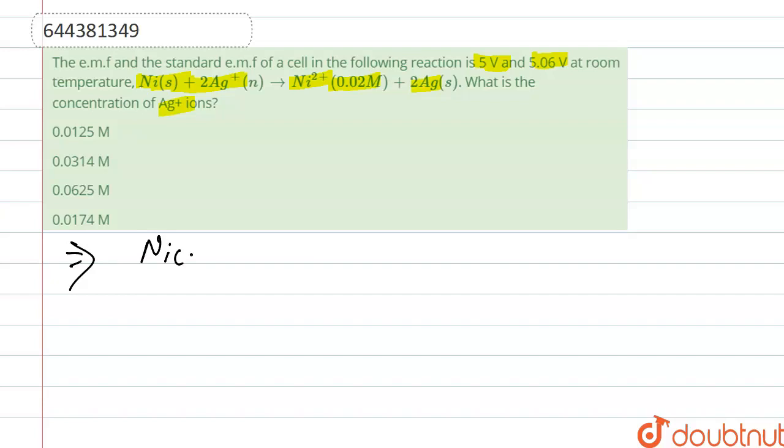The reaction is given: Ni reacts with 2Ag+ to form Ni2+ whose concentration is given as 0.02 M plus 2Ag solid. We have to find out the concentration of Ag+.